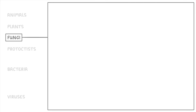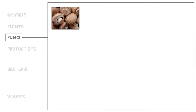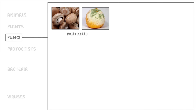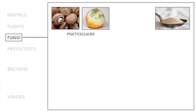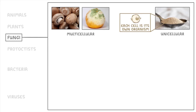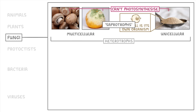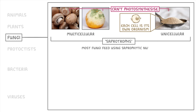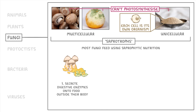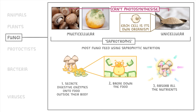Next up, we have fungi, which are a bit harder to explain. Some fungi, like mushrooms or molds that can spoil food, are multicellular organisms. But other fungi, like the yeast used for baking bread, are unicellular — meaning each cell is its own organism. Although some fungi look a bit like plants, a key difference is that fungi can't photosynthesize. Instead, they have to get their energy from other organisms like animals do, so they count as heterotrophs. We often refer to fungi as saprotrophs, because most fungi feed using saprotrophic nutrition — a process where they secrete digestive enzymes onto food outside their body, wait for the enzymes to break down the food, and then absorb the broken-down nutrients back in. So they're basically doing digestion outside of their body.